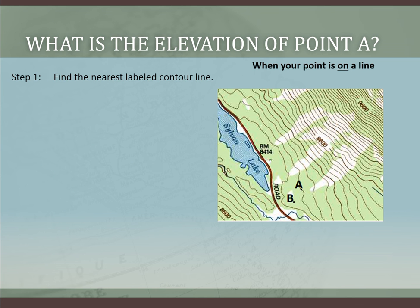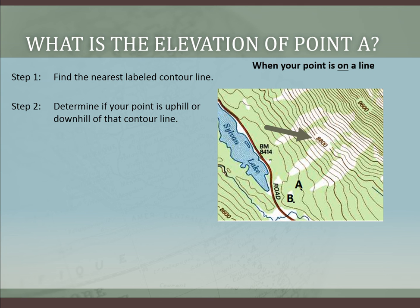For point A, we find the nearest labeled contour line, and it's this one right here. It says 8,800, so 8,800 feet. Next, we determine if our point is uphill or downhill of that contour line — that tells us if we need to add or subtract. We look at the nearby numbers and find that over here it says BM 8414, and over here it has 8,800.